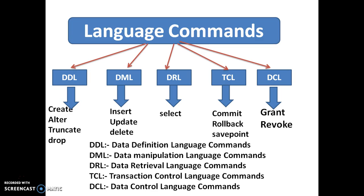DRL commands include the SELECT command. If you want to retrieve data from a table — a single row, single column, multiple rows, the entire table, or data based on a specific condition such as all employee details in a specific department — you use the SELECT command.